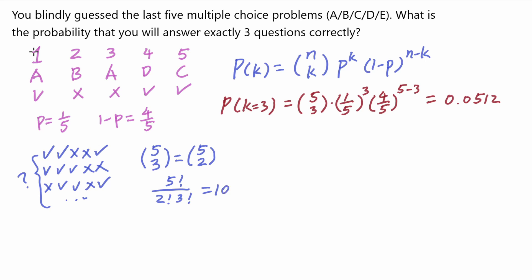So that means if I write out all the possibilities of true and false combinations, where there are three correct and two incorrect answers, there will be a total of 10 ways. For example,